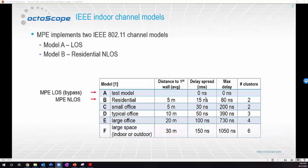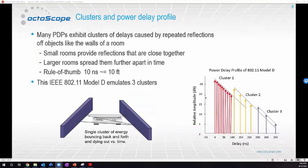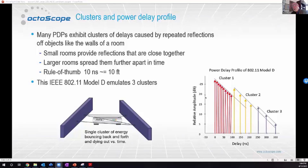We have a hand raised. Zi Huang asks: when you say 10 nanoseconds is 10 feet, is the 10 feet between two walls, or one way or two way? The speed of light is approximately one nanosecond per foot, so that's the total path length — a bounce there and back. Good question.